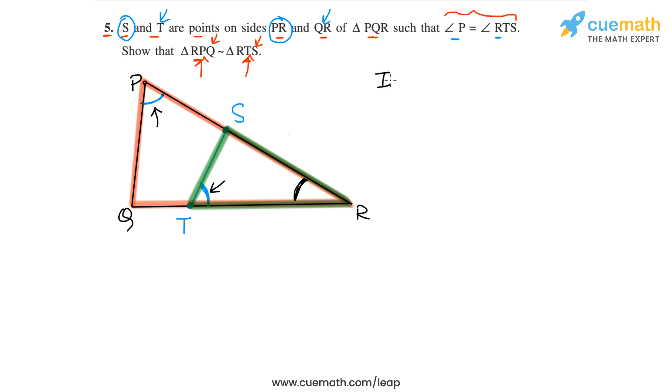In triangle RPQ and triangle RTS, we are given that angle P is equal to angle RTS. This is given to us. And we also observe that angle R is common to both triangles. This is common. And therefore we can say that the two triangles will be similar.